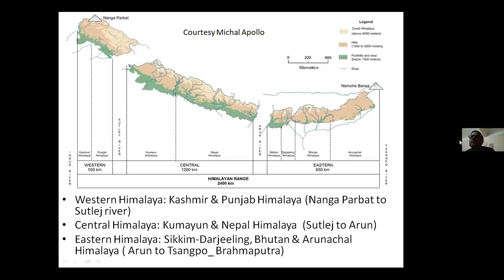The presentation will focus mostly on the actual urbanization impact in the Indian Himalayan region. The Indian Himalayan region can be classified into three distinct zones separated by natural barriers. Between Nangaparbath and the Sutlej River is the Western Himalaya, including Kashmir and Punjab. The second is the Central Himalaya, between the Sutlej and the Arun River, including Kumaon and part of Nepal. And the Eastern Himalaya, between the Arun to Tsangpo-Brahmaputra river basin, includes Sikkim, Darjeeling, Bhutan, and Arunachal Himalaya.